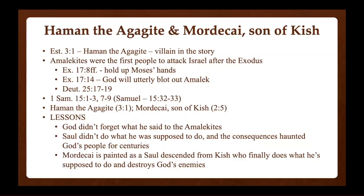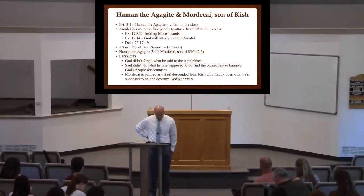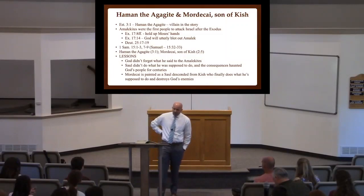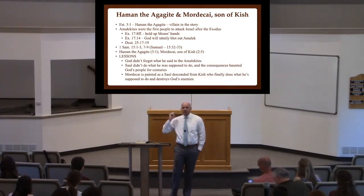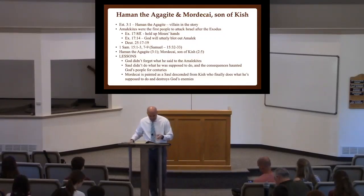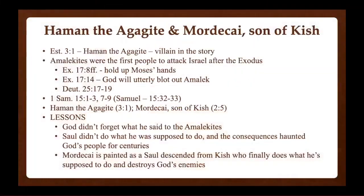Go to Exodus chapter 17. We're going all the way back to when the Jewish people are coming up out of Egyptian slavery. Starting in verse 8: the Amalekites are the very first people to attack the Jews coming out of Egypt on their way to the Promised Land. 'Amalek came and fought with Israel at Rephidim.' This is the story where as long as Moses held up his hands, Israel was victorious against Amalek, but his hands got tired — so Joshua and Hur came and held up his hands for him.